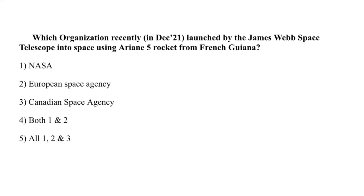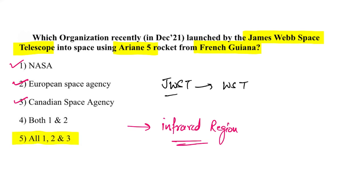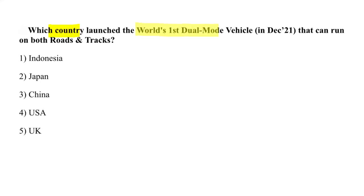The James Webb Space Telescope was launched into space using an Ariane 5 rocket from French Guiana. This is the world's largest telescope ever made. It will observe and research infrared rays from the universe. It is a joint project of NASA, the European Space Agency, and the Canadian Space Agency.